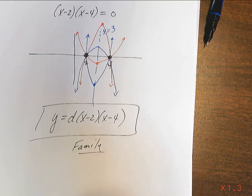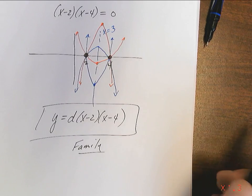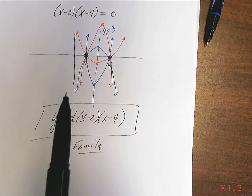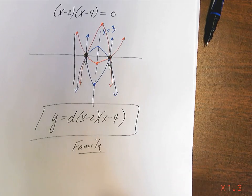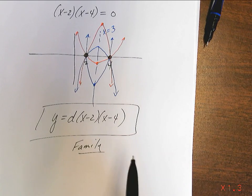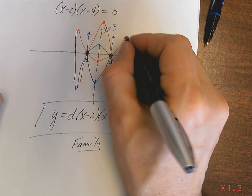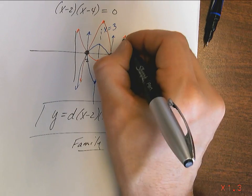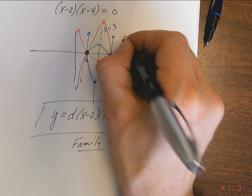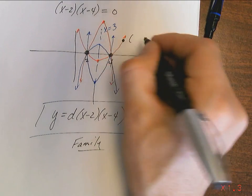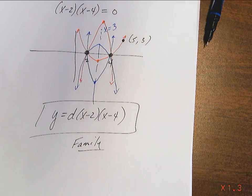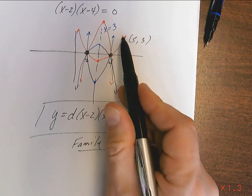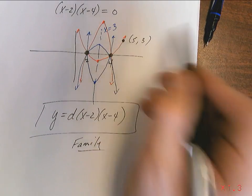If I want to know one particular member of this family, I need to know one other point on the curve. Any other point. So let's say I wanted to know this guy. This is Uncle Jack. So let's say I wanted to know Uncle Jack. Well, I'd have to know one other point on him. And let's say that that point was 5 comma 3. I made it up. Don't be worrying about where I got it from. I made up the 5 comma 3.